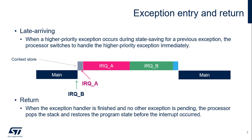When an interrupt arrives, the processor first saves the program context before executing the interrupt handler. If the processor is performing this context-saving operation when an interrupt of higher priority arrives, the processor switches directly to handling the higher priority interrupt when it is finished saving the program context. Then, tail-chaining is used prior to executing the IRQ-B interrupt service routine. When all exception handlers have been run and no other exception is pending, the processor restores the previous context from the stack and returns to normal application execution.